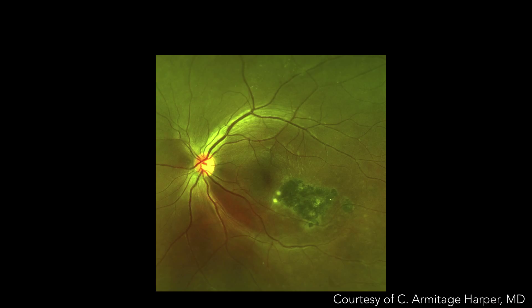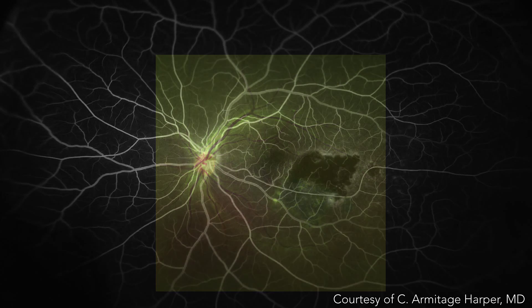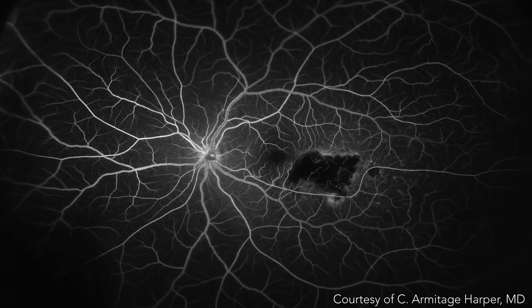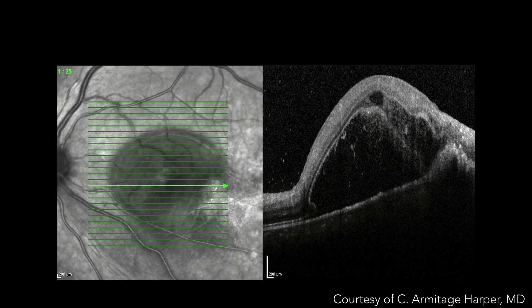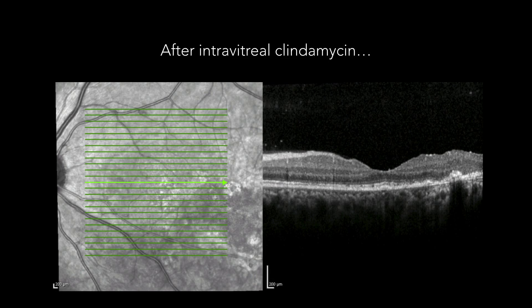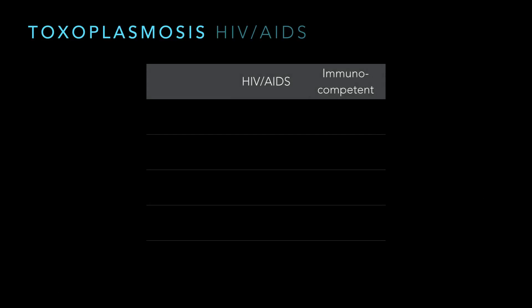Here's a case from Armie Harper — a kid that came in. This is an Optos color, which is not a true color fundus photo; we're looking at two wavelengths smashed together. You see this scar and a couple of little white dots, patient's vision is down. On FA there's hypofluorescence, and on OCT there's a lot of subretinal fluid — you wouldn't have guessed it based on the color photo. He treated it with intravitreal clindamycin, and about a month later it was totally flattened out. It resolved a lot faster than natural history.